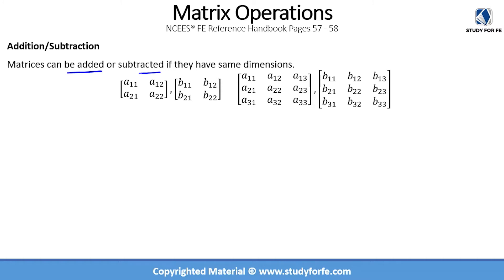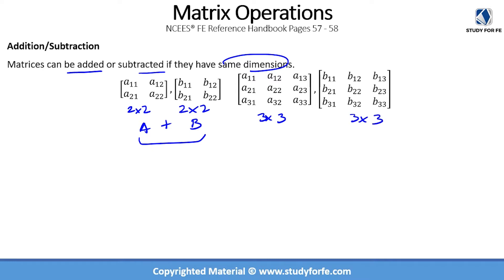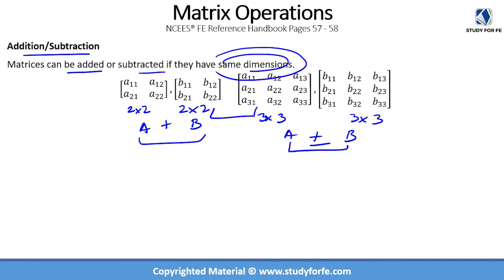Matrices can be added or subtracted only if they have the same dimensions. Over here we have a two by two matrix — it can be added or subtracted to another two by two matrix. A three by three matrix can only be added or subtracted to another three by three matrix. The dimensions have to be exactly the same for addition and subtraction to take place.